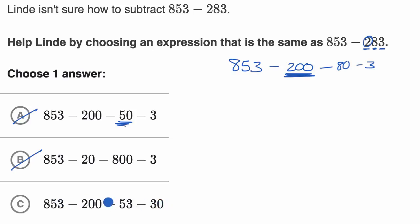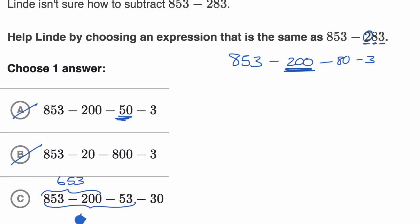Now you might be wondering, why would they even do it this way? Well, it's easier to do in your head. 853 minus 200 is 653. You take away 53 from that and you're left with 600. And then 600 minus 30.